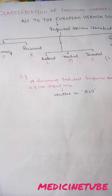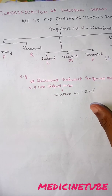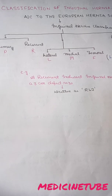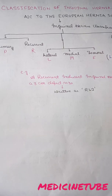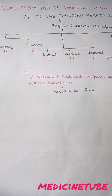And last, most importantly, the defect size. The defect size is measured on the basis of finger breadth, where one finger breadth equals approximately 1.5 cm. So if the defect size is 3 cm, it is written as 2 finger breadths. If the defect size is 4.5 cm, it is written as 3 finger breadths.